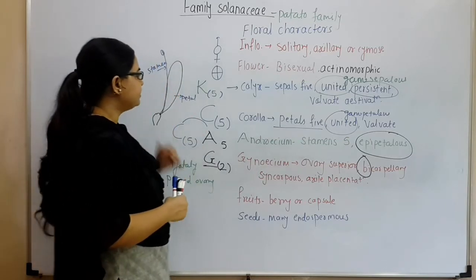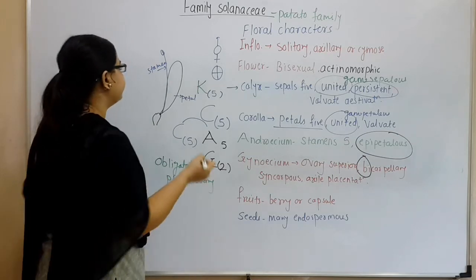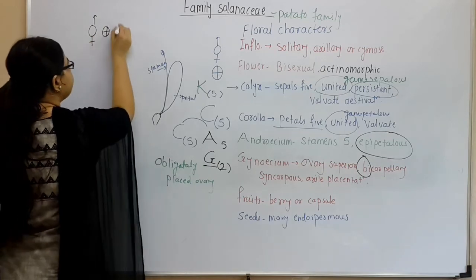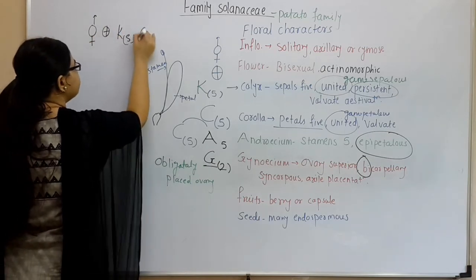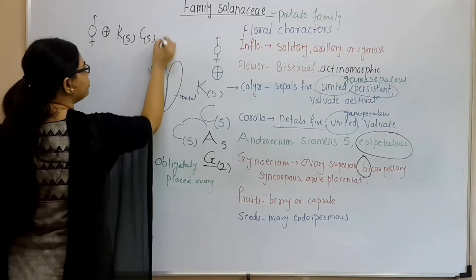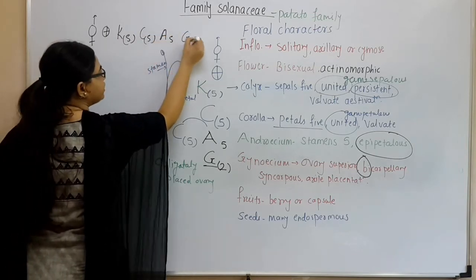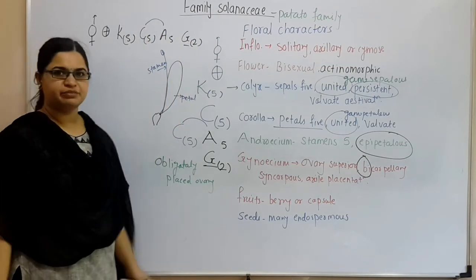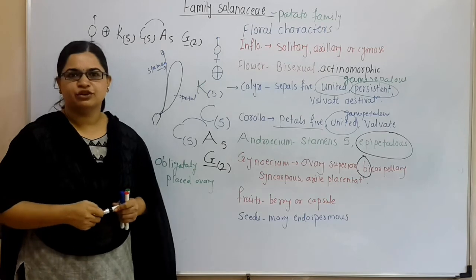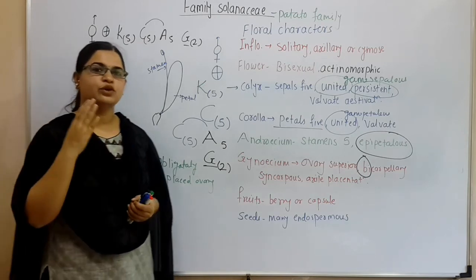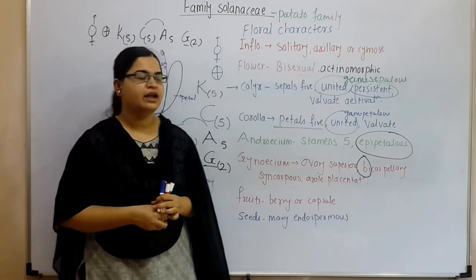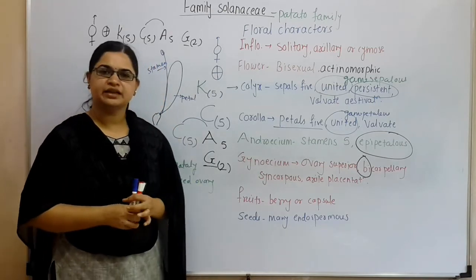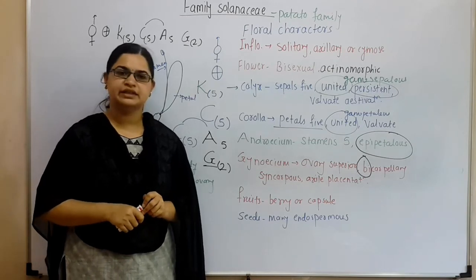This is how we write the floral formula. Bisexual symbol, then actinomorphic symbol, then K5 fused (bracket), C5 fused (bracket), A5 not fused with epipetalous condition shown, G2 fused (bracket). Writing the floral formula is very easy if you have understood the conditions and how to write it from a description.